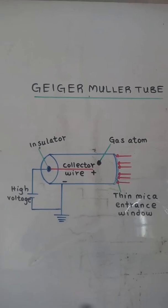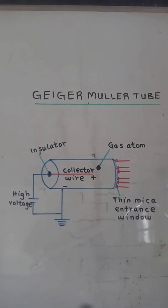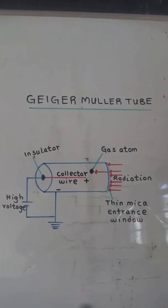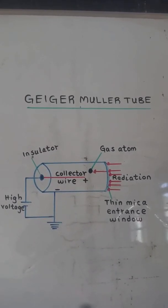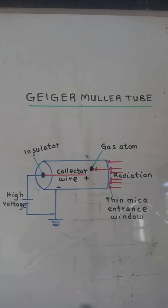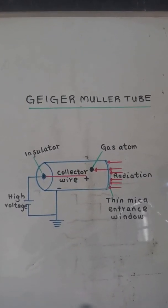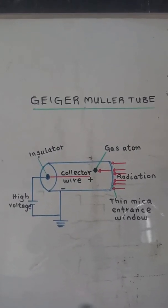When radiation enters the tube, it causes electrons to be ejected from the gaseous atoms and are then accelerated toward the positively charged collector wire.